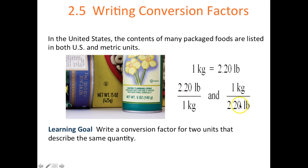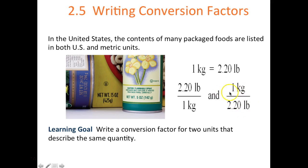If you have five kilograms, you multiply by the conversion factor that has pounds on top so the kilograms cancel. If you have five pounds and want to convert to kilograms, you use the conversion factor with kilograms in the numerator so the pounds cancel. Your desired unit always has to be on the numerator of the conversion factor — that's how you choose your conversion factor.